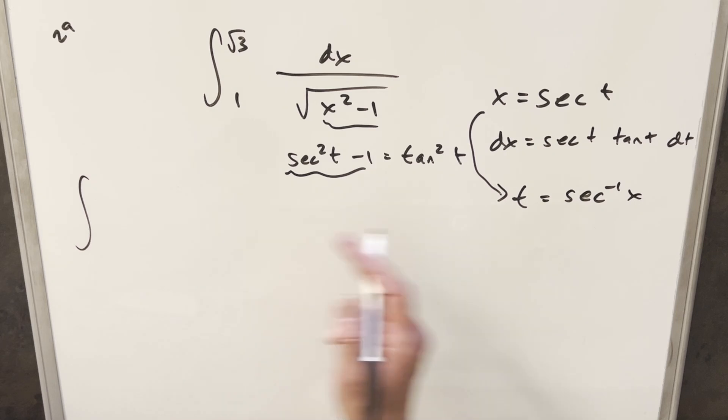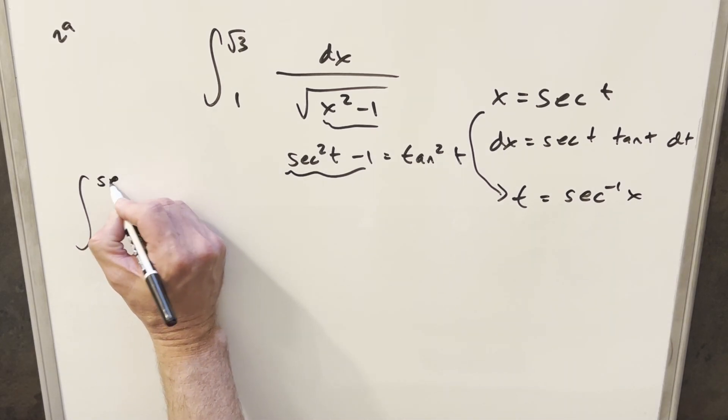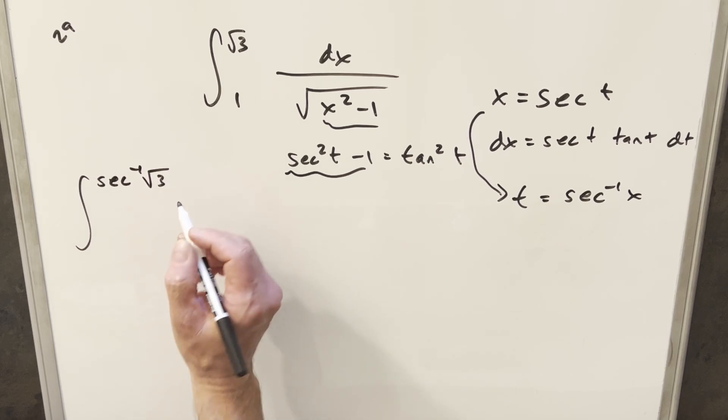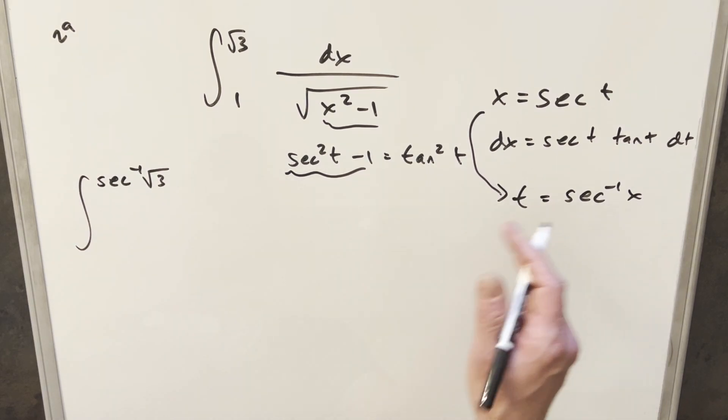So first evaluating our upper bound square root of 3, this is going to be secant inverse of square root of 3. I don't have a nice way to simplify that, so I'm just going to leave that as secant inverse square root of 3. And next evaluating this at 1, secant inverse at 1, that's going to be at 0.